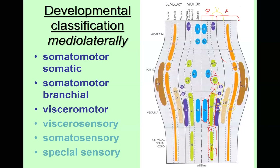The last modality is special sensory. We have three special sensory nerves: the olfactory nerve for smell, the optic nerve for vision, and the vestibulocochlear nerve for balance and hearing. This is just a review of what we covered yesterday, to understand the modalities carried by the nerves.